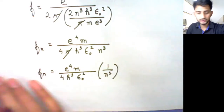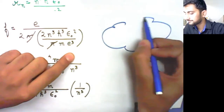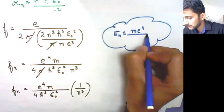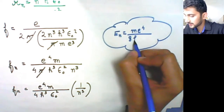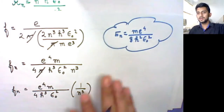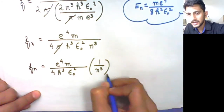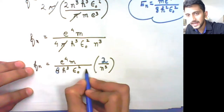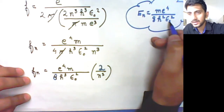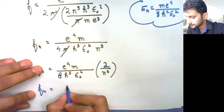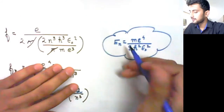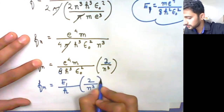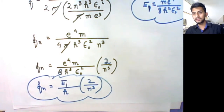This term can be related to the energy equation we calculated a few days ago. The energy of an electron in the nth orbit is given by me⁴ upon 8h²ε₀². If we multiply and divide fₙ by 2, this becomes 8 in the denominator and gives 2/n³ outside. Removing one factor of h, the frequency of the nth orbital is given by 2E₁ upon hn³, where E₁ is the energy of the first orbital. This is the equation for frequency of revolution in the nth orbit.